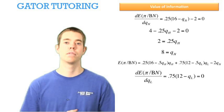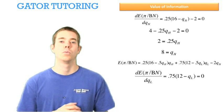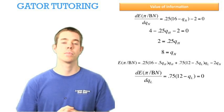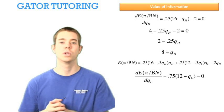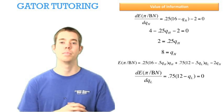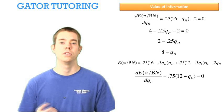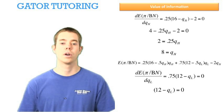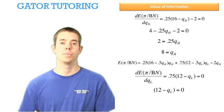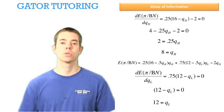We take the derivative of the same profit function with respect to QL. Leaving the probability outside parentheses is helpful here because there is no marginal cost term, so we can divide both sides by 0.75. Since 0 divided by 0.75 is still 0, the 0.75 doesn't affect our answer, and we solve to find QL is equal to 12.